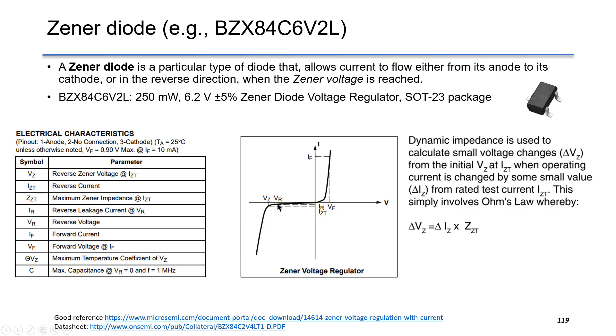but also in the reverse direction when the Zener voltage is reversed. The dynamic impedance of Zener diode is defined as a small voltage change due to the small current change at a particular operating point. Usually,